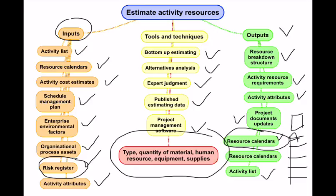Resource calendar updates may happen during the time of estimating activity resources if you are provisionally locking a resource against a particular activity. Overall, estimating activity resources is all about identifying the type, quantity of material, human resources, equipment, and supplies required to perform each activity. Please go back to the PMBOK and read the relevant pages explaining the Estimate Activity Resources process.